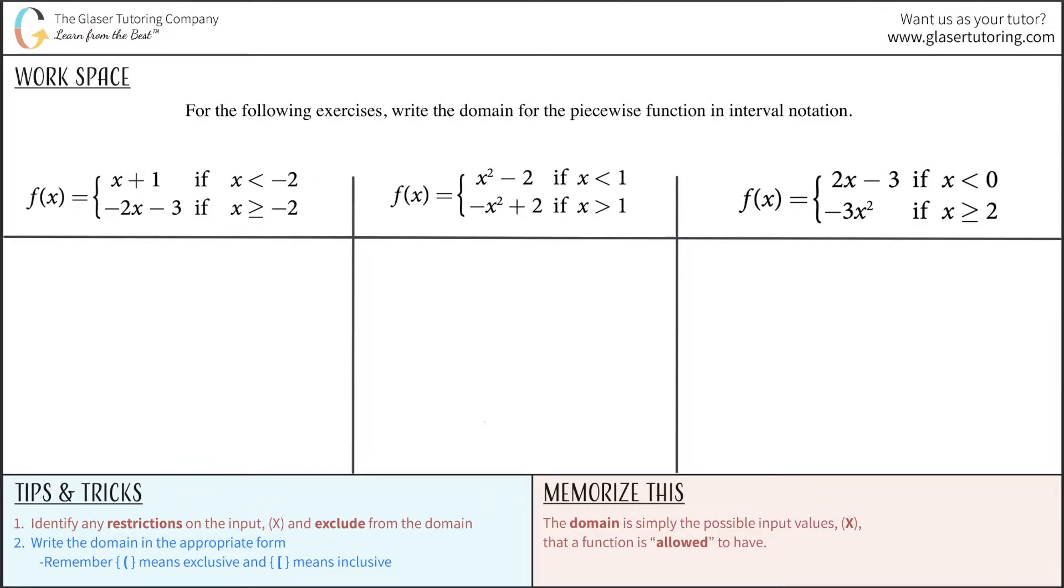So what we want to think about is in this particular location, it says that x can be less than negative two for the first one. And if I plug in any values less than negative two, this function will always work. There's no real limitation. That's the first step I'm doing down here: identify any restrictions or limitations. There's no limitations for plugging in any negative number less than negative two into this equation. It's always going to work.